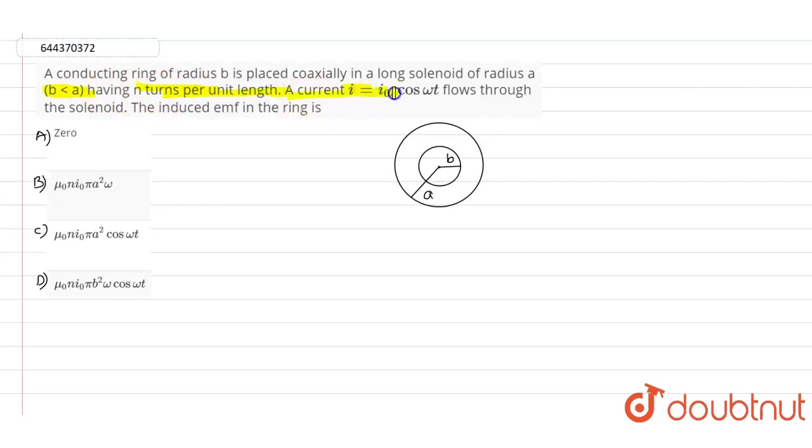A current i = i₀ cos(ωt) flows through the solenoid. We need to find the induced EMF in the ring.